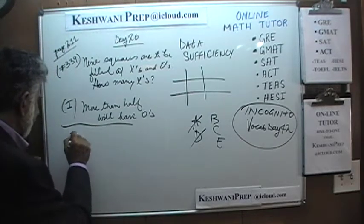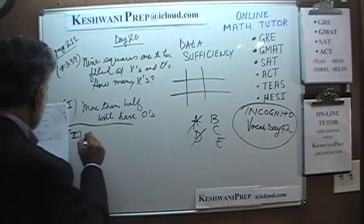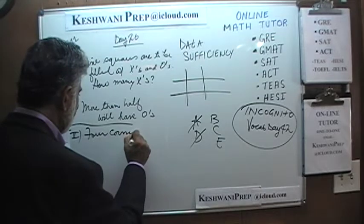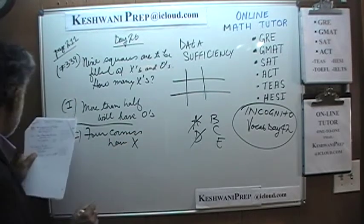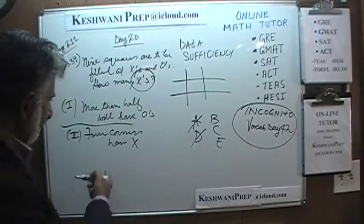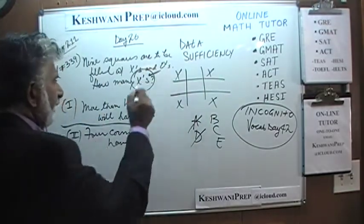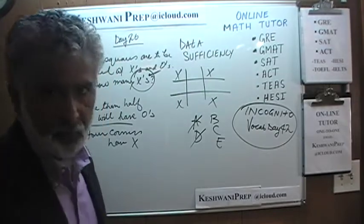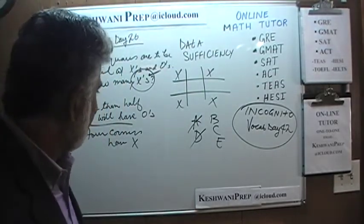The second statement tells us that the four corners have X's. What we are trying to figure out is how many X's there are. We know the second statement tells us that the four corners have X's, but we cannot answer how many X's there are because we don't know how many more there are. Maybe they are all X's, or maybe there are only 4, or 9, or 8. We can't really tell.